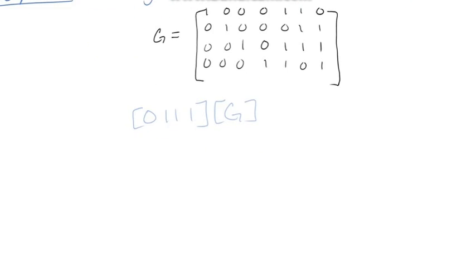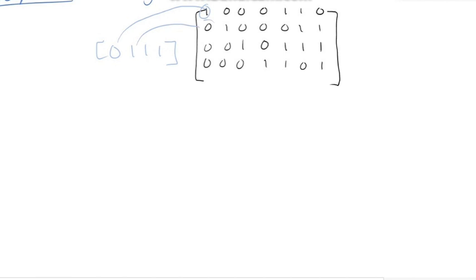So we're going to take that and multiply it times G. So just a quick reminder on how to do that. You're going to take the zero, multiply it here, take this one, multiply it here. And then we are going to add all those numbers up. So zero times one is zero, plus one times zero is zero, plus one times zero here is zero, and one times zero here is zero. So grand total of zero there.